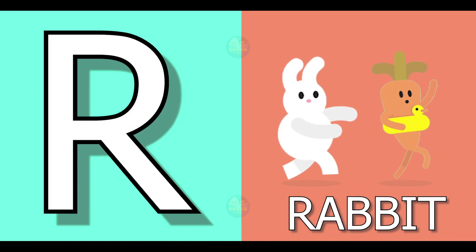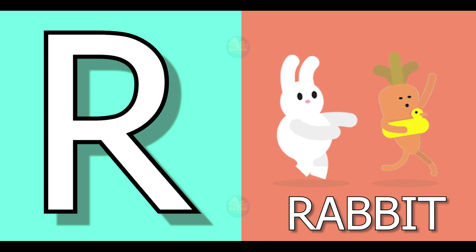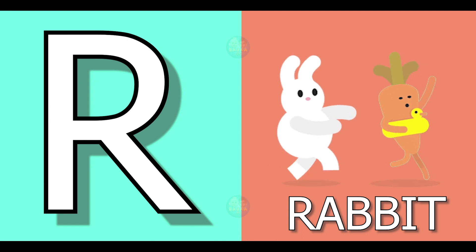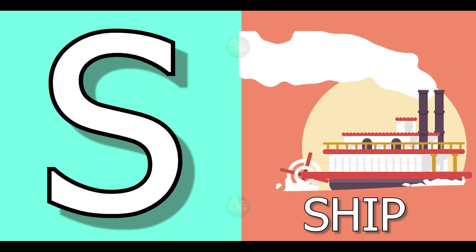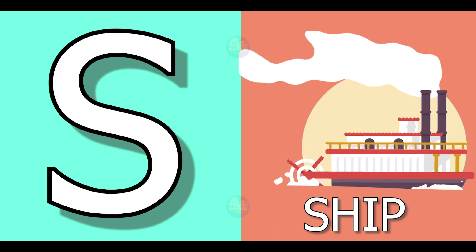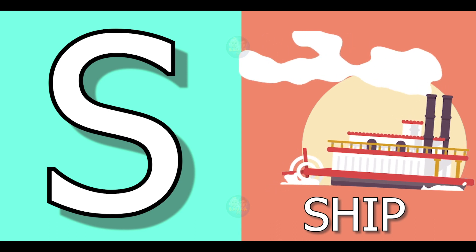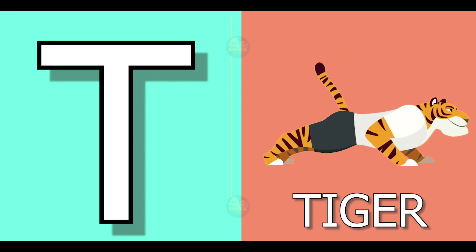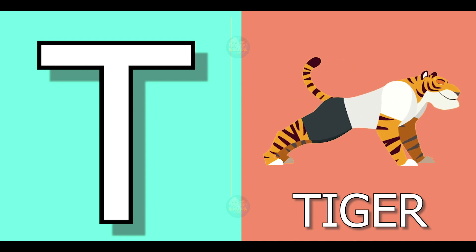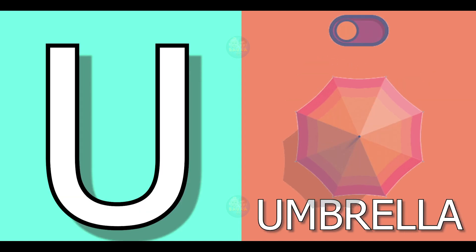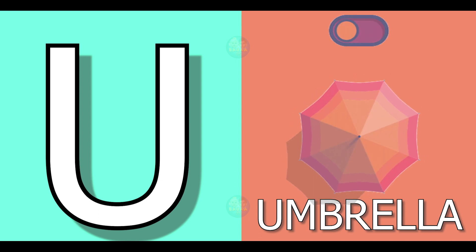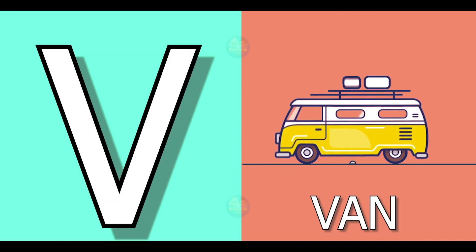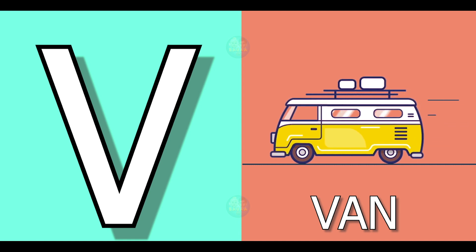R for rabbit, rabbit means khargosh. S for ship, ship means jahaj. T for tiger, tiger means bug. U for umbrella, umbrella means chata. V for van, van means van.